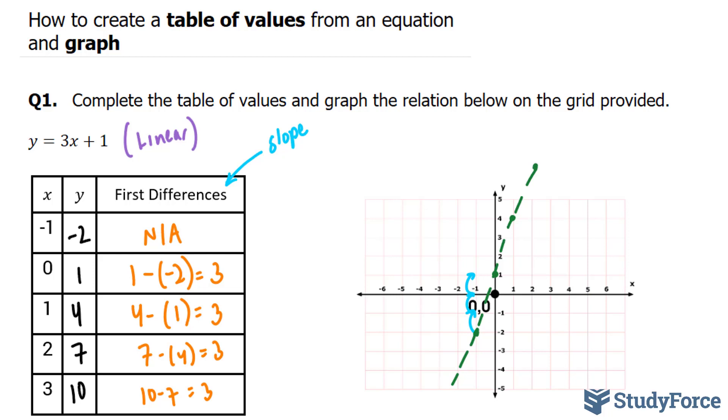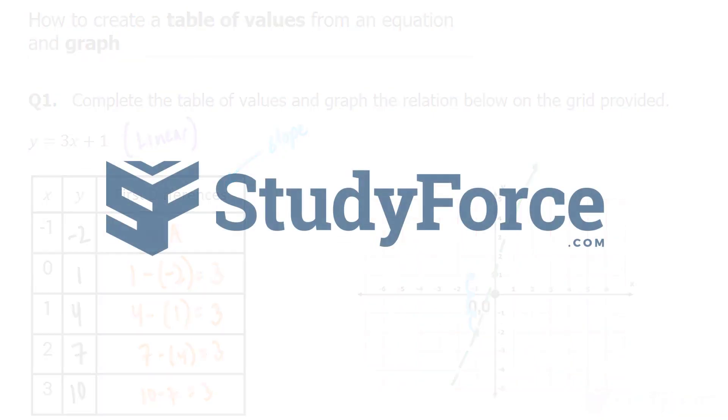Two examples on how to create a table of values from an equation and then use the points to create a graph. This can be done for literally any equation that has an input and an output. If you found this tutorial helpful, please support our channel by subscribing or by liking this video. If you have any further questions, visit our website at studyforce.com. We're an online service for students seeking free homework help. See you soon.